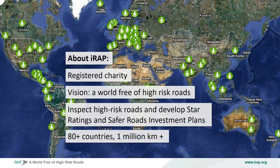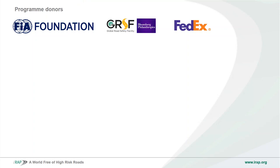IRAP was created to help tackle that huge problem. We're a registered charity with a simple vision: a world free of high risk roads. We measure the risk on roads all around the world and come up with suggestions about how to reduce that risk. We've worked with about 80 countries and assessed more than a million kilometres of roads. We're quite a small team — about 20 people — but we've made a big impact by partnering with leading organisations in road safety globally.